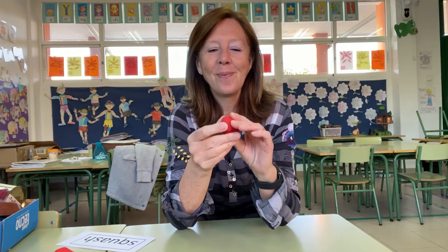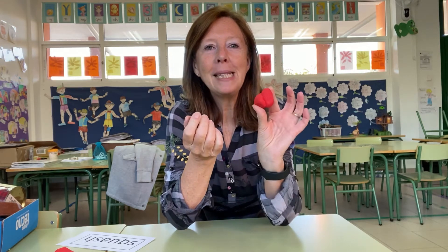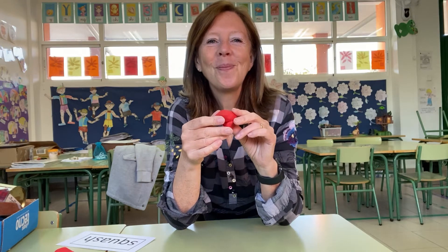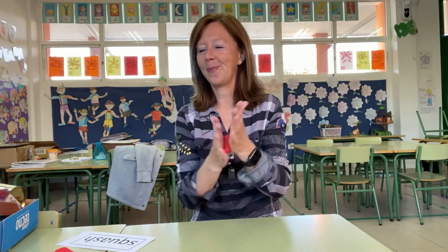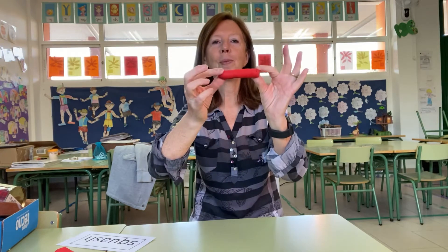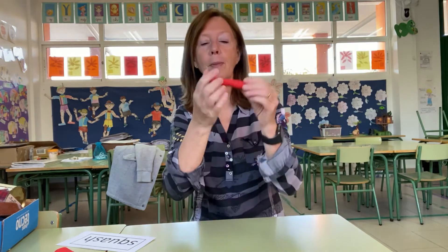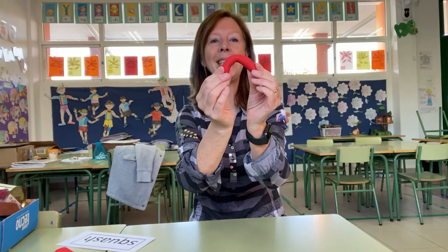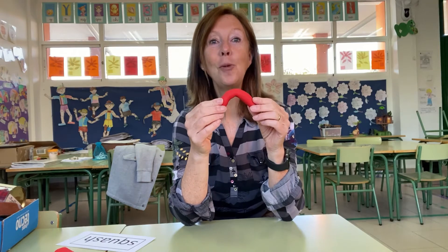Plasticine is another material. It's very bendy. Have you got some plasticine? What can you make? Pause the video while you make something. Now roll your plasticine into a sausage. Let's see if we can change the shape of the plasticine. We can change its shape in different ways. We can bend the plasticine. Can you bend your plasticine?